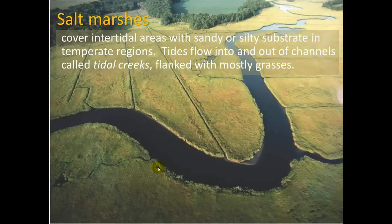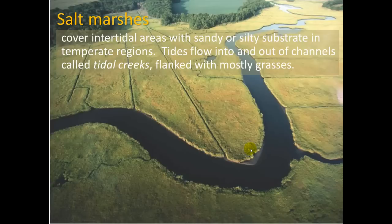Salt marshes cover intertidal areas with sandy or silty substrate in temperate regions — you see them in California, Georgia, and off the coast of Florida, where you can especially smell methane gas given off by anaerobic bacteria. Tides flow into and out of channels called tidal creeks, flanked mostly by grasses. These are examples of wetlands.